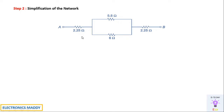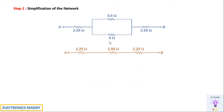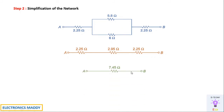After simplification, the redrawn network shows 5.8 ohms and 6 ohms connected in parallel. Using the parallel formula Rp = (R1·R2)/(R1 + R2), we get 2.95 ohms. Adding the remaining series resistors gives a total of 7.45 ohms. So the effective resistance from A to B is 7.45 ohms.